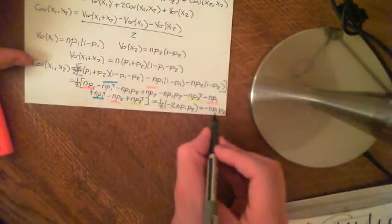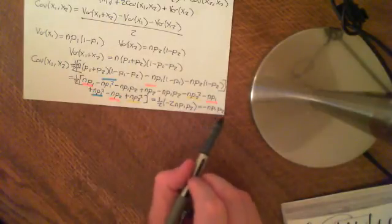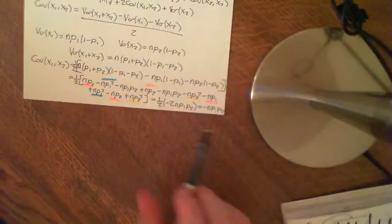If you want to generalize that, it will just be −n·pi·pj. So the covariance of xi with xj is −n·pi·pj. This is always a negative number, meaning they're negatively correlated, which is what we would expect: if you have more balls in basket 1, you expect to have fewer balls in basket 2, because you have a finite number of balls to disperse among the baskets. So this result makes sense.